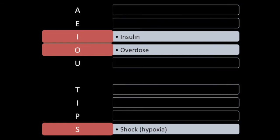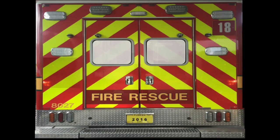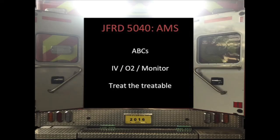The ones you really need to worry about are insulin, overdose, and shock due to hypoxemia — those are the ones you'll be able to maybe reverse and definitely diagnose. So get the patient in the back of the truck. According to your SOGs, standard first-line supportive care: do your ABCs, IV, O2, monitor, and then treat the treatable. Going back to that list, what are some things you can treat in the back of the truck?